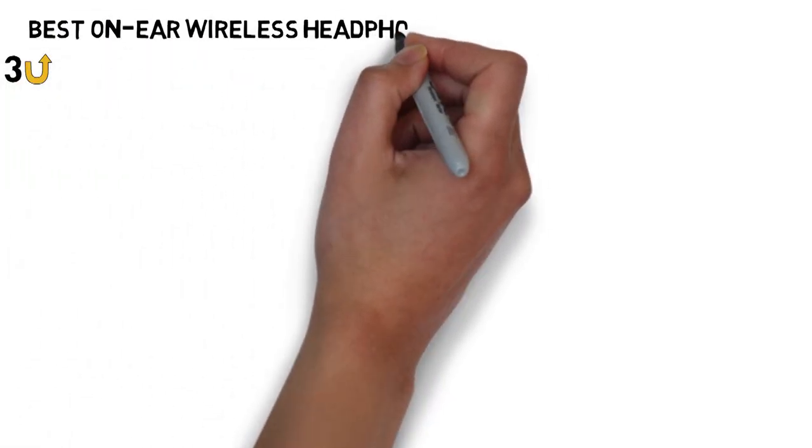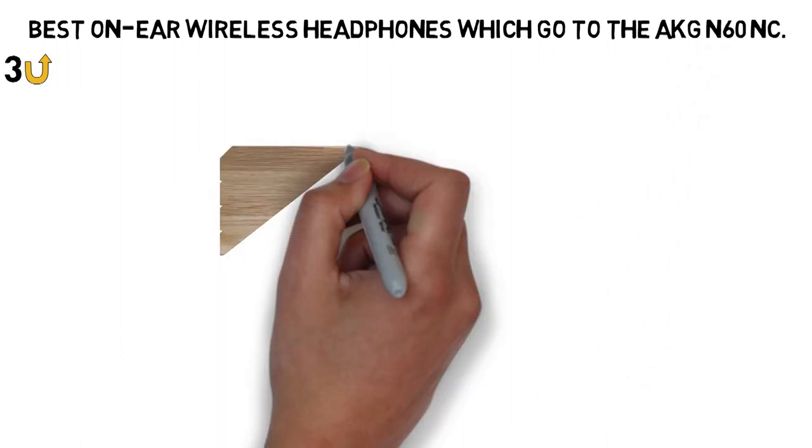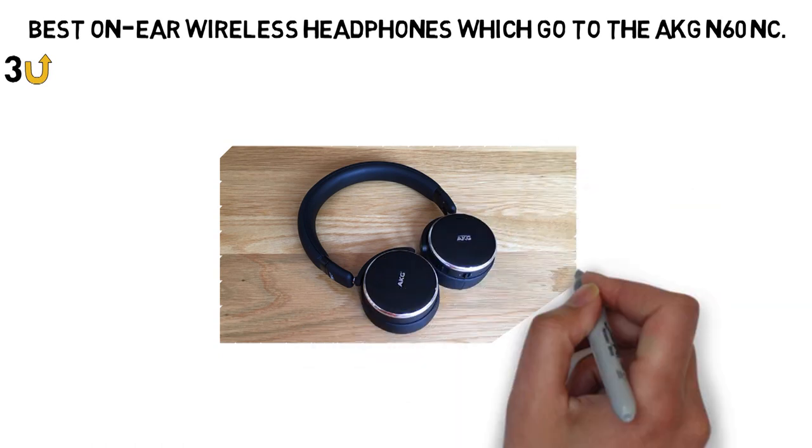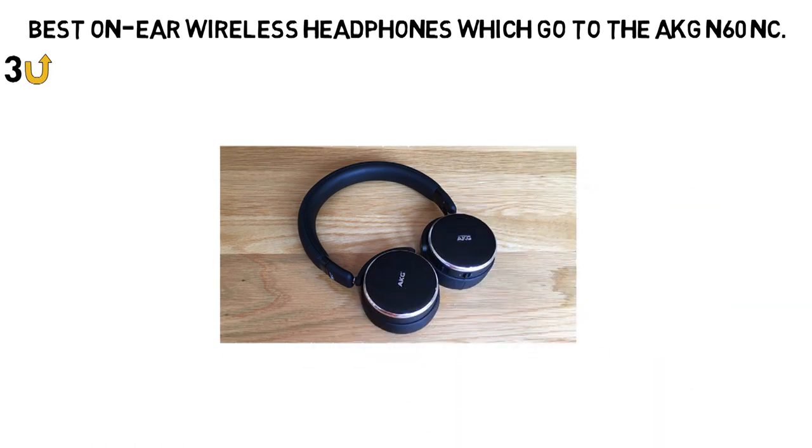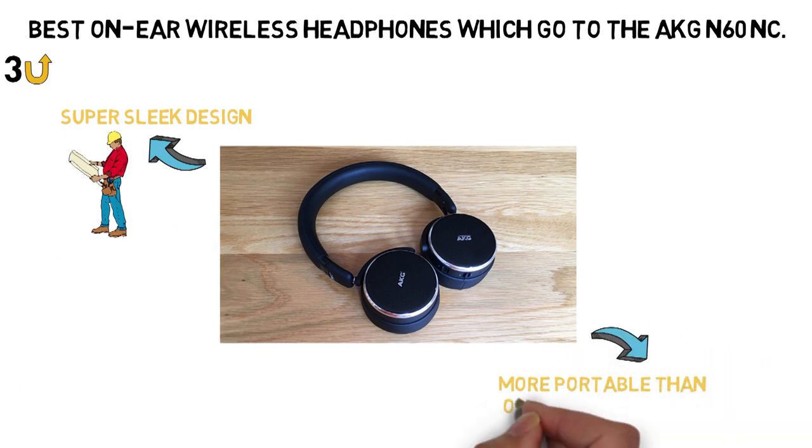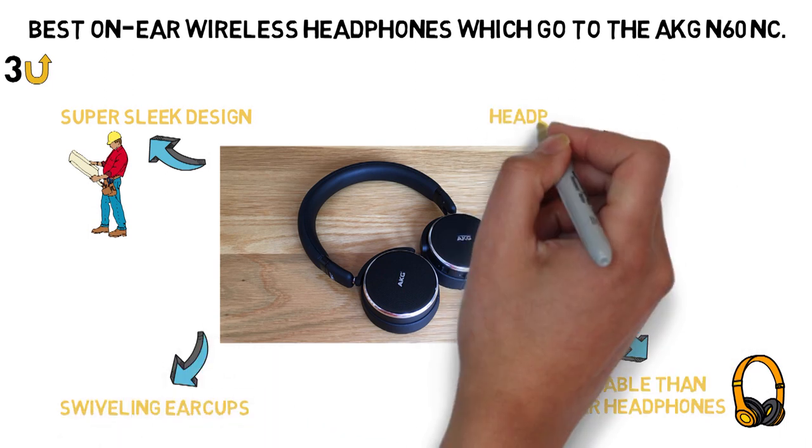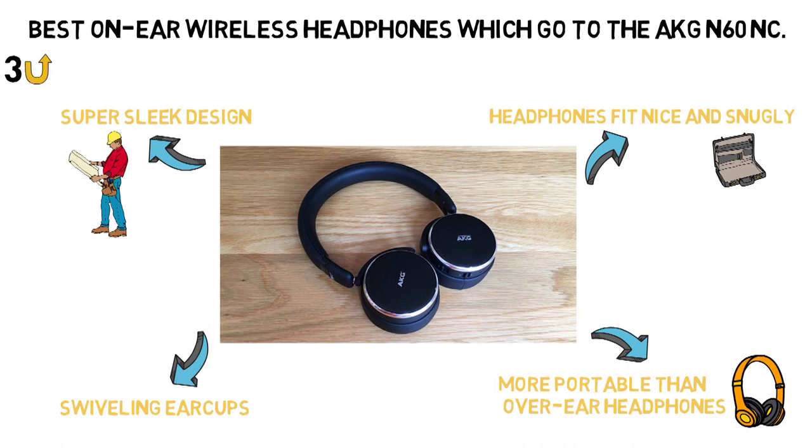Up next we have the best on-ear wireless headphones, which go to the AKG N60NC. Looking for something a little more portable than the over-ear Sennheiser wireless headphones, the AKG N60NC wireless headphones could be the ones for you. The headphones feature a super sleek design with a black and silver color scheme along with an on-ear form factor which makes them a lot more portable than over-ear headphones. They're made even more portable with their swiveling ear cups, which help the headphones fit nice and snugly in the included carrying bag.